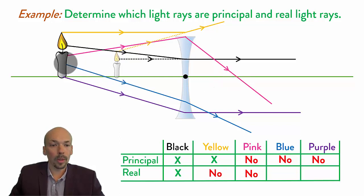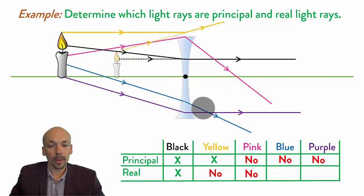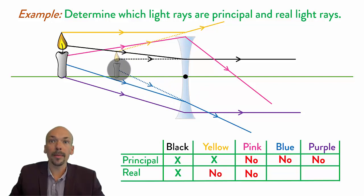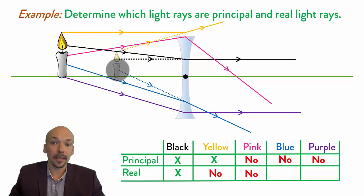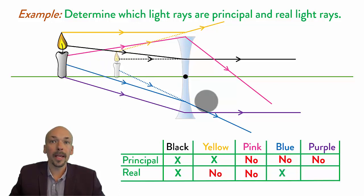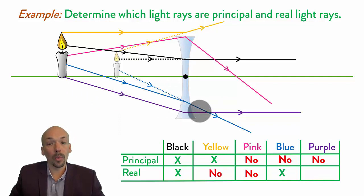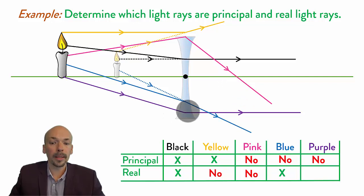The blue one comes from the middle of the candle. To determine if it's a real one, we need to draw this one back. If we draw it back, we can see that it also hits the middle of the image. So as it starts here and ends here at the same point, it is a real light ray. And finally the purple one — same as the pink one, it should be going away from the principal axis, but it's going more toward it than it was in the beginning. So it's not a real light ray.